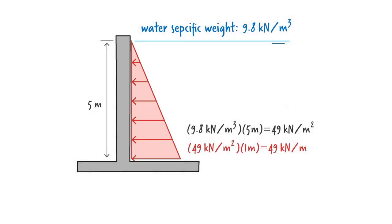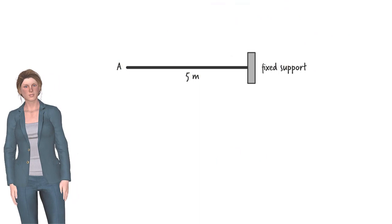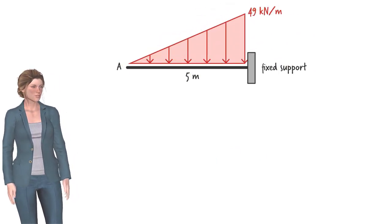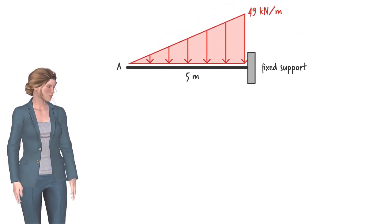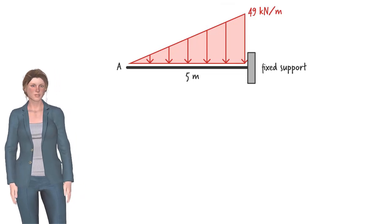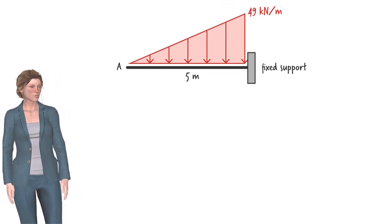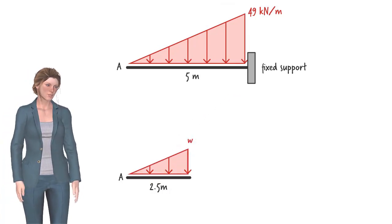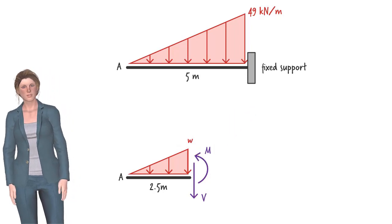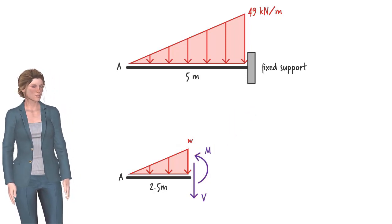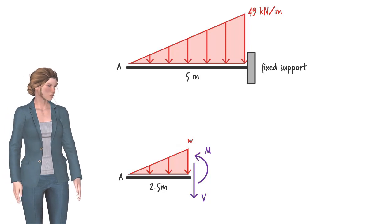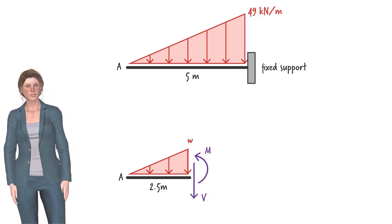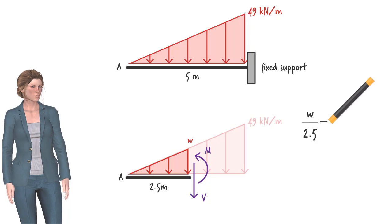We can view the wall as a cantilever beam being fixed at the base by a concrete footing. So let's draw the beam in a more familiar manner. Suppose we wish to determine shear and moment at the midpoint as well as the base of the wall. To determine the internal forces at the midpoint, we cut the beam 2.5 meters away from its free end, then draw the free body diagram of the left segment. We can determine the intensity of the distributed load at the cut point using the height-to-base ratio property of similar triangles.